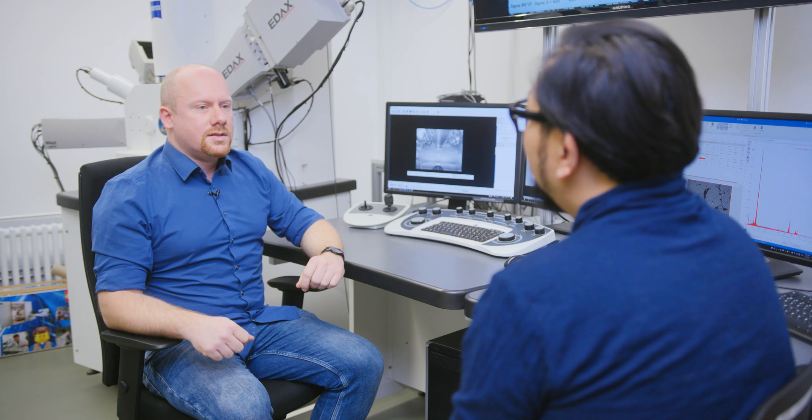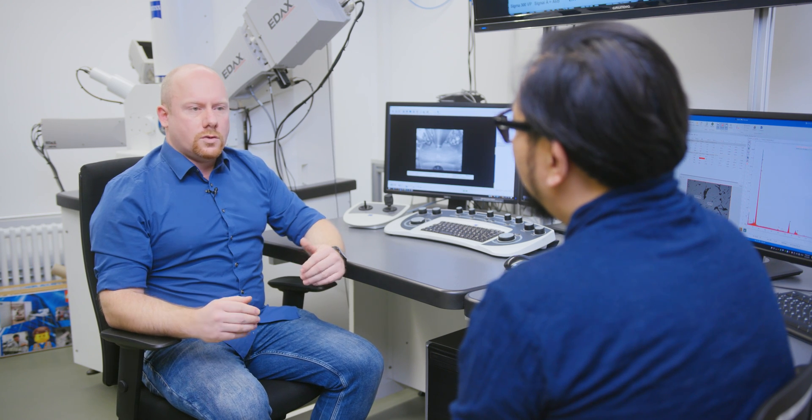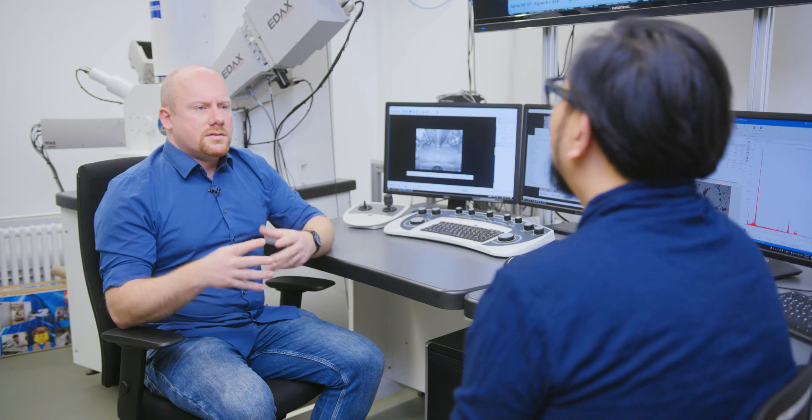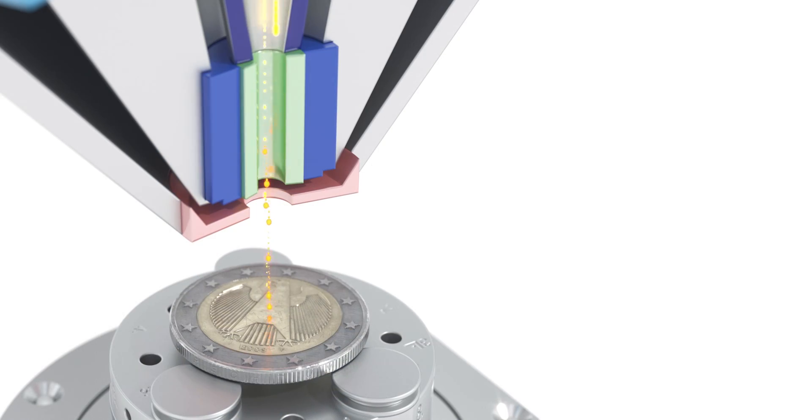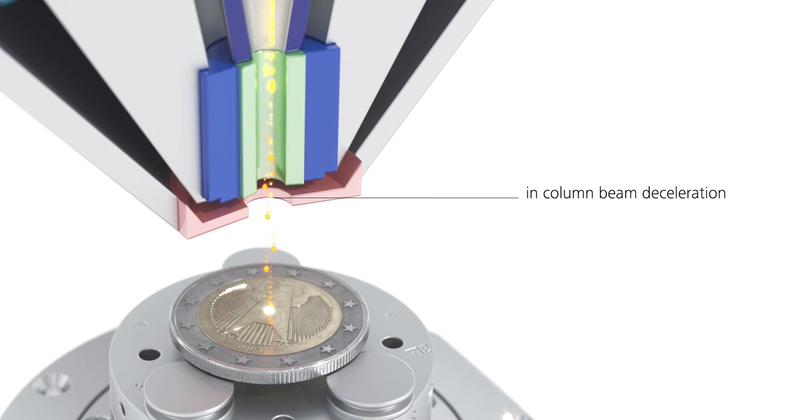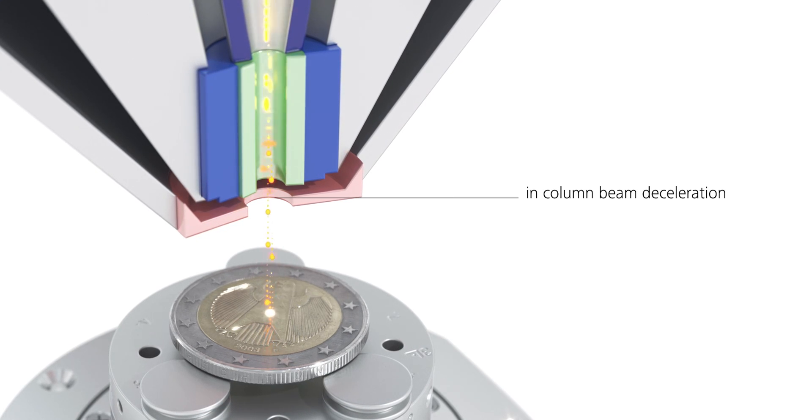And in our case here with the Sigma system, we have a so-called field emission system. This is a different technology but in principle it produces electrons and they are with electromagnetic lenses in columns focused on the sample. So focused electron beams hit the sample.